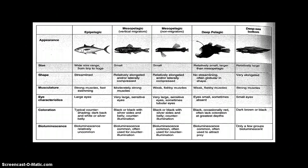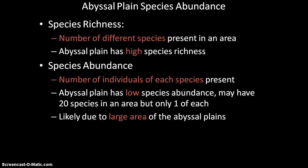This picture shows a comparison between different regions of the ocean and what the fish look like and their adaptations to survive in those habitats — a handout of this was provided. Species richness versus species abundance on the abyssal plain: species richness is simply the number of different species present in an area, while species abundance is the number of individuals of each species present.